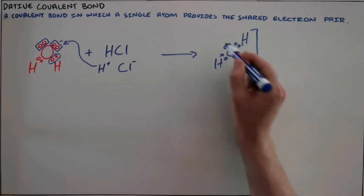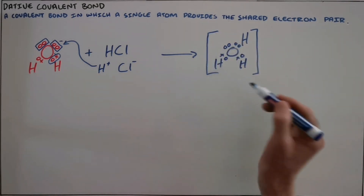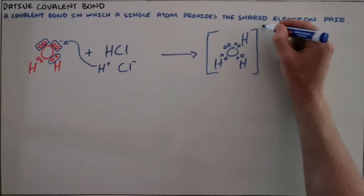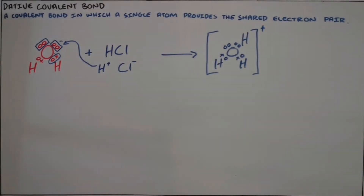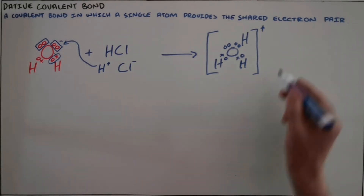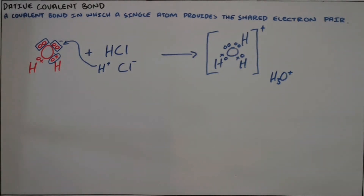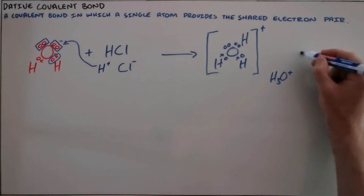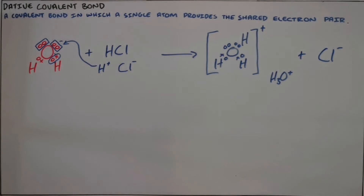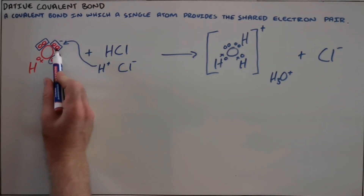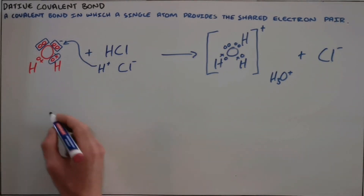What we have found is that the number of electrons in this ion has not changed, but the number of protons has. And so we have formed a positively charged ion, which can be written H3O+, that is the formation of hydronium. Obviously our negatively charged chlorine ion remains. The big difference between a covalent bond and a dative covalent bond, or a coordinate covalent bond, is that the shared electron pair is provided by only a single atom.